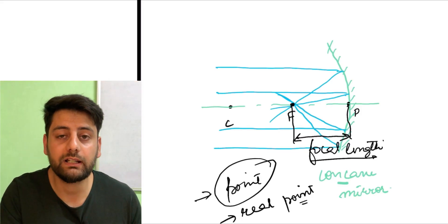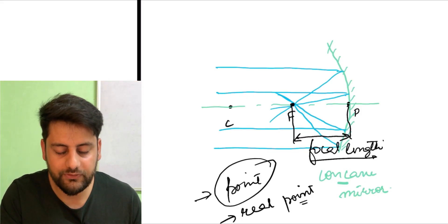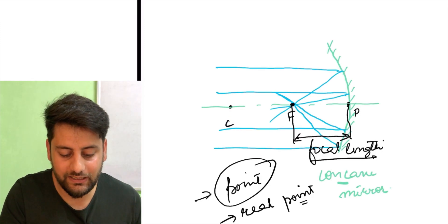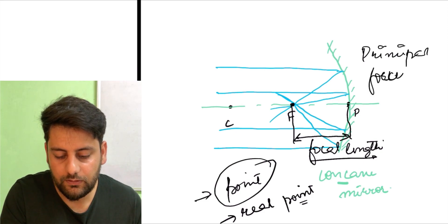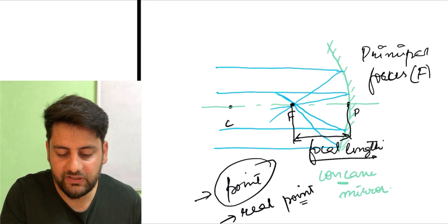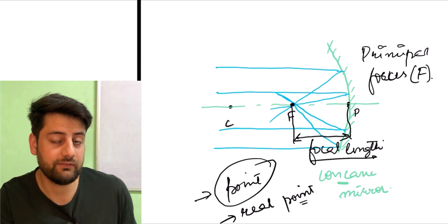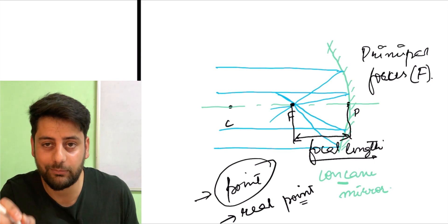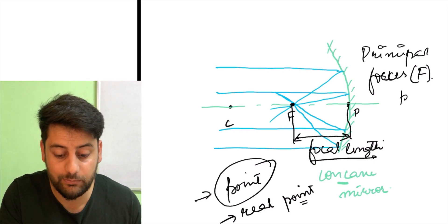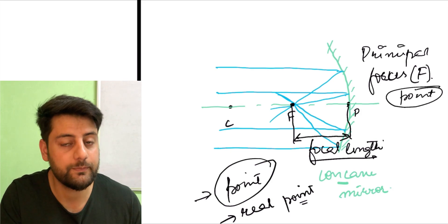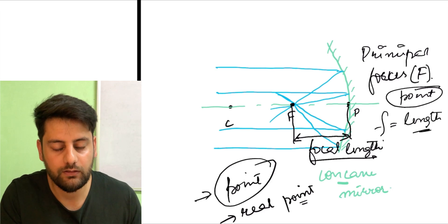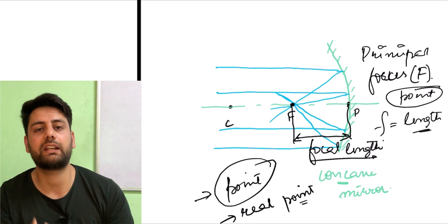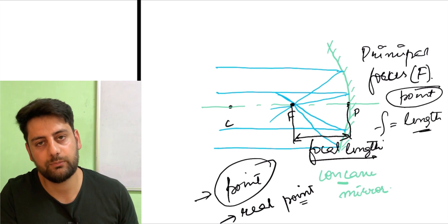One more point I want to discuss here: this principal focus is a real point. We will always represent it with capital F. So if I am writing capital F, that means it is a principal focus — it is a point. And if I am writing small f, that means it is a focal length. So small f denotes the focal length, and capital F denotes the principal focus.